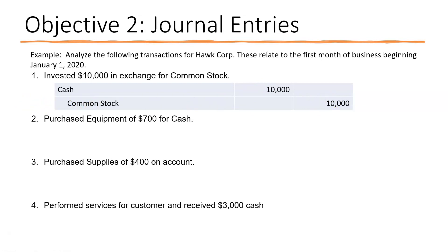Transaction two: purchased equipment of $700 for cash. That's an entry to debit equipment — equipment is an asset, we're increasing assets, we now own a piece of equipment worth $700. We purchased it for cash, so we credit cash $700.